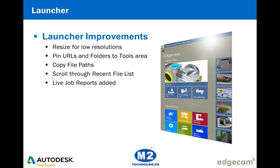The Edgecam launcher was introduced at version 2013 R2 and has some slight improvements at 2014 R1 based on customer feedback to improve usability. It automatically resizes for lower than optimal resolutions — so if you're using Edgecam on a 720p device, a touch screen, or a tablet, the launcher will now resize to be fully usable. We can now pin URLs and folders into the tools area. The recently used file list allows right-clicking over any file to copy the file path, and you can scroll through the file list. New live job reports have also been added into the launcher.